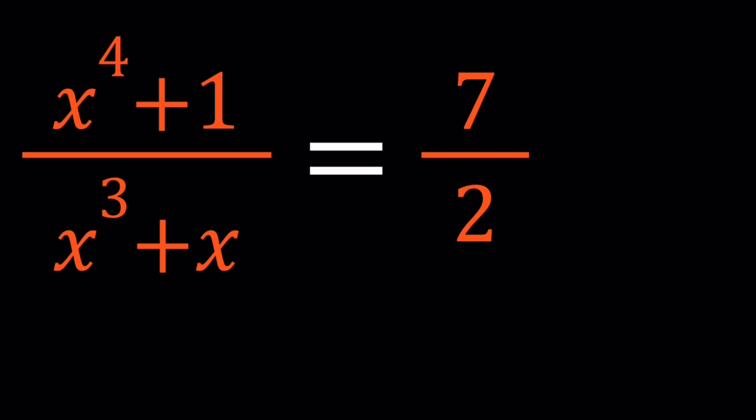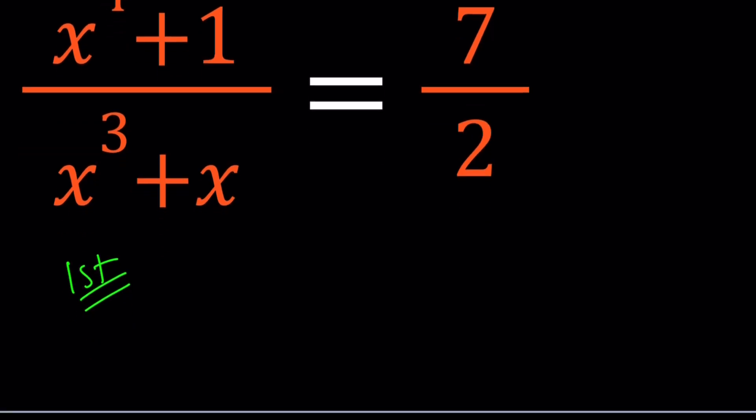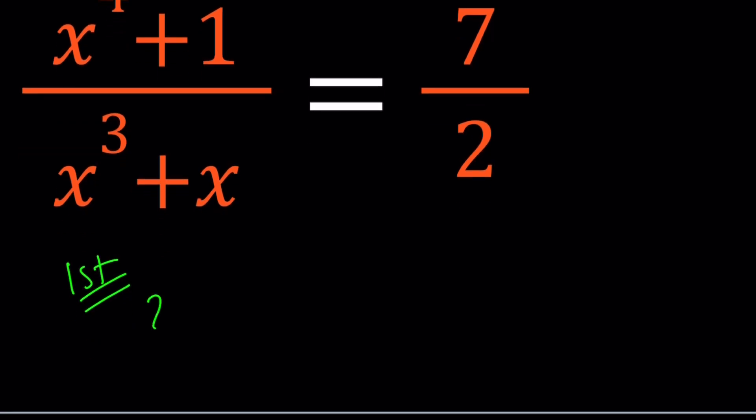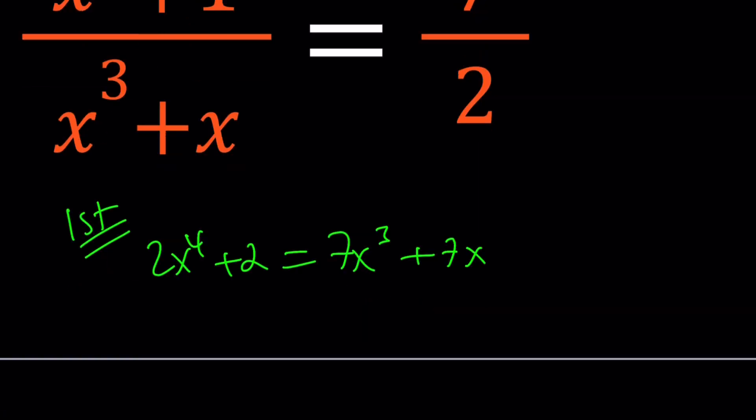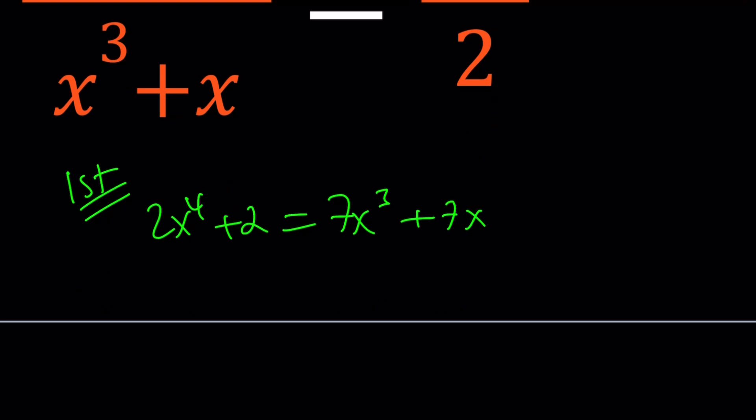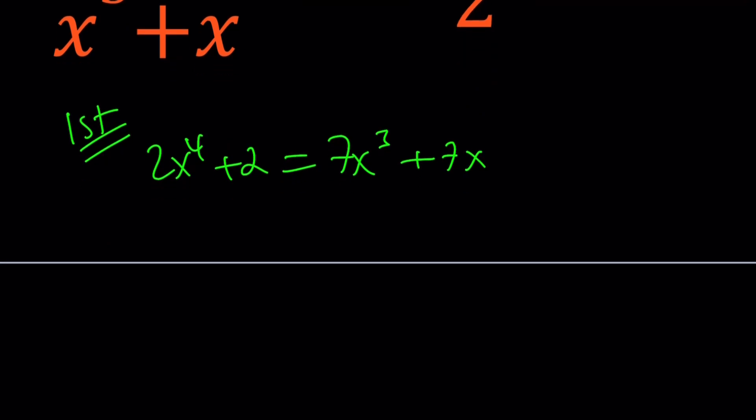Now when you get an equation like this, what is the most typical response? Cross multiplication. So let's start with that, let's call that first method. So let's multiply. We're going to get 2x to the 4th plus 2 equals 7x cubed plus 7x. Now we can go ahead and put everything on the same side. This is a quartic equation, 4th degree.